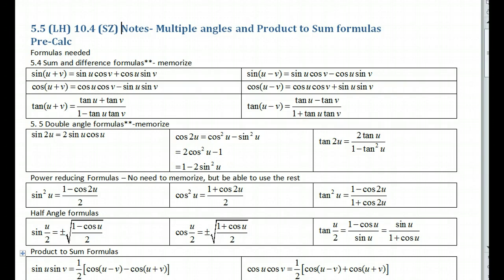Hi, this is section 5.5 of Larson Hostetler 10.4 out of Stitziger. The notes we're looking at are multiple angles and product-to-sum formulas. There are a lot of formulas here, and they're pretty daunting. Some of them we want you to memorize, and some of them I'm just going to show to you so that you've seen them. If I give one to you on the test, you should be able to just use the formula in general and try to sort it out.